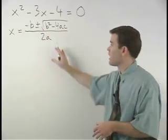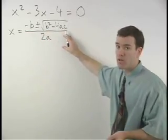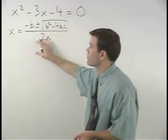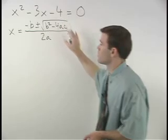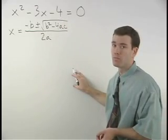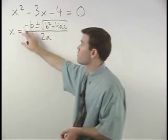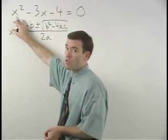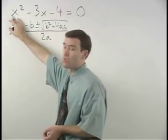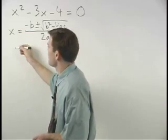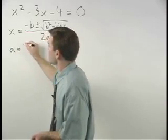The values for a, b, and c in the formula come from the coefficients on our three terms in the trinomial. The value for a comes from the coefficient on the x squared term, which in this case is 1. So we say that a equals 1.